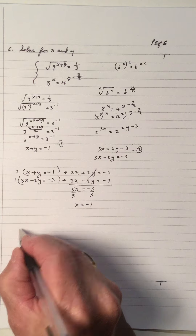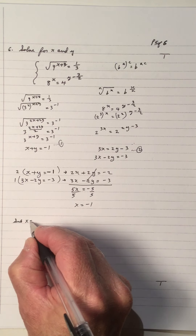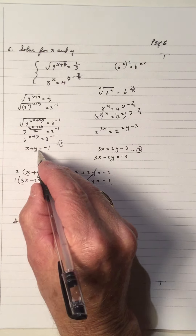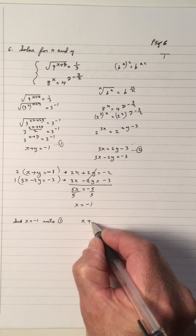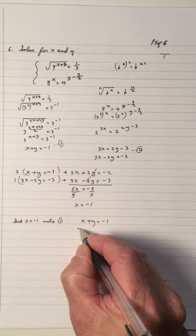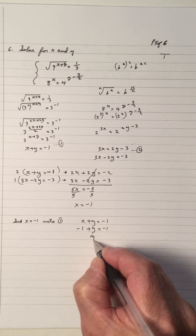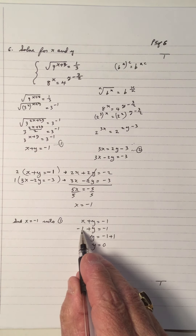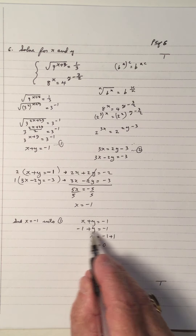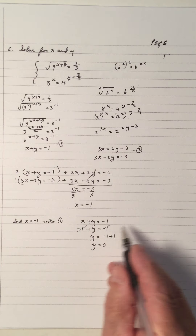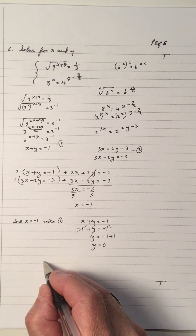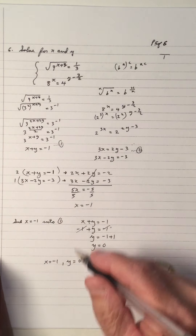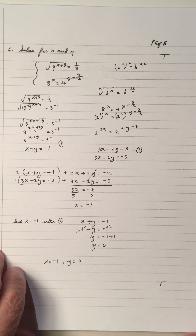Substituting x = −1 into equation 1: −1 + y = −1, so y = 0. The solution is x = −1 and y = 0. These are the values that satisfy both equations. Give yourself a mark if you have that correct.